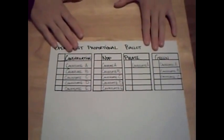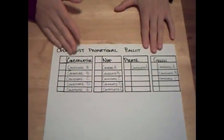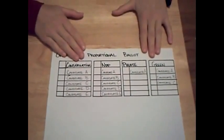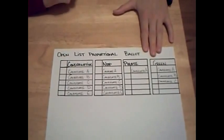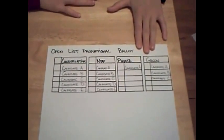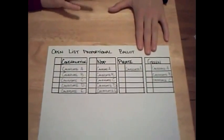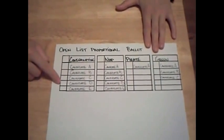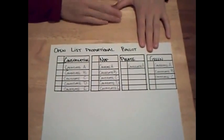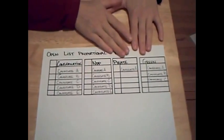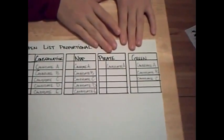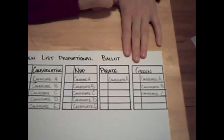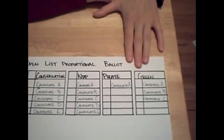Then the seats are divided as follows. If the Conservative Party wins 40% of the vote within that riding, then they will win 40% of the five seats available, which means they will win two seats. And those two seats are given to whichever two Conservative candidates won the most votes. As another example, if the Pirate Party won 20% of the vote in that riding, then they will win one seat, and since there is only one candidate running for the Pirate Party, that will be the candidate to win that seat.